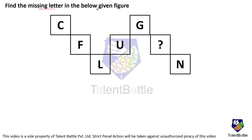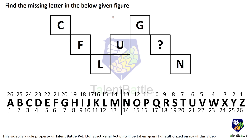Find the missing letter in the below given figure. If you carefully observe — write A to Z and give them position numbers. These are position numbers of the English alphabet: A is 1, B is 2, and Z is 26. The top ones are reverse position numbers. We are not primarily concerned with those, but it's good to have both because we never know if the logic requires reverse position numbers.